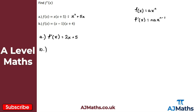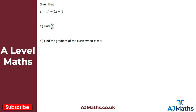For part b, f of x is the product of two brackets. We could use the product rule, but instead we expand: multiplying out gives x squared plus 4x minus x plus 3x minus 4, which simplifies to x squared plus 3x minus 4. Differentiating term by term: x squared gives 2x, plus 3x gives plus 3, and minus 4 gives zero. So f prime of x equals 2x plus 3.